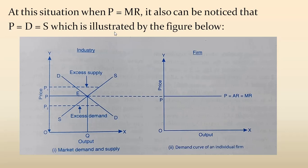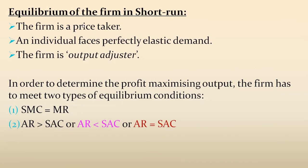The price is determined at the point where demand and supply intersect — that is point E. These figures are taken from the book, so please refer to the book as well. The firm is a price taker — it doesn't decide the price; it accepts the price through the interaction of the two market forces of demand and supply. Second point: an individual firm faces perfectly elastic demand. So an individual firm faces perfectly elastic demand.